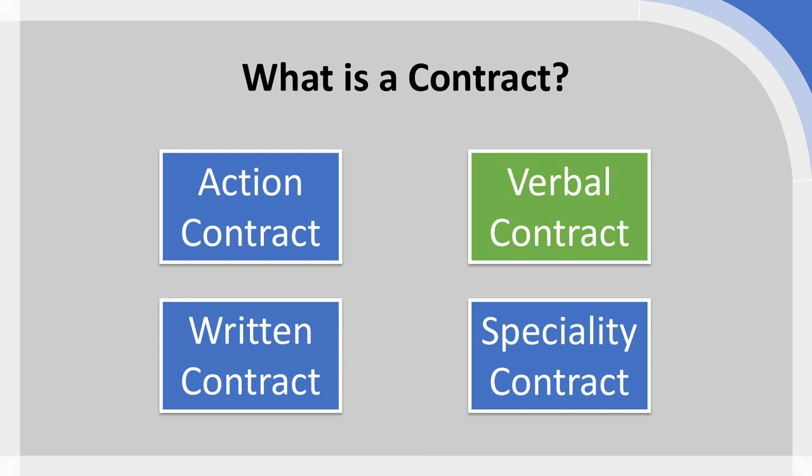Most contracts are going to be written contracts — an agreement where the terms, conditions, and details are clearly written down and there is evidence of assent or agreement by all of the parties involved. For obvious reasons, this is the preferred method for any kind of contract in both business and personal spheres.